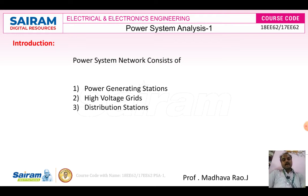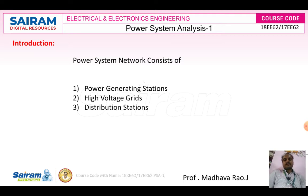To reduce I²R losses we increase the voltage. After reaching the transmission stations, we need to distribute the electrical power, converting into different feeders — 11 kV feeders, 66 kV, 33 kV feeders. We then distribute to secondary distribution transformers (local transformers), from which power goes to the consumers. Distribution stations are used to step down voltage from higher to lower levels, increasing current and distributing to consumers.